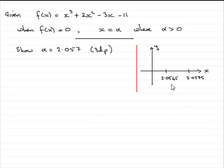Now, what I'm going to do is I'm going to look at putting 2.0565 into this equation. In other words, what we do is f of 2.0565.